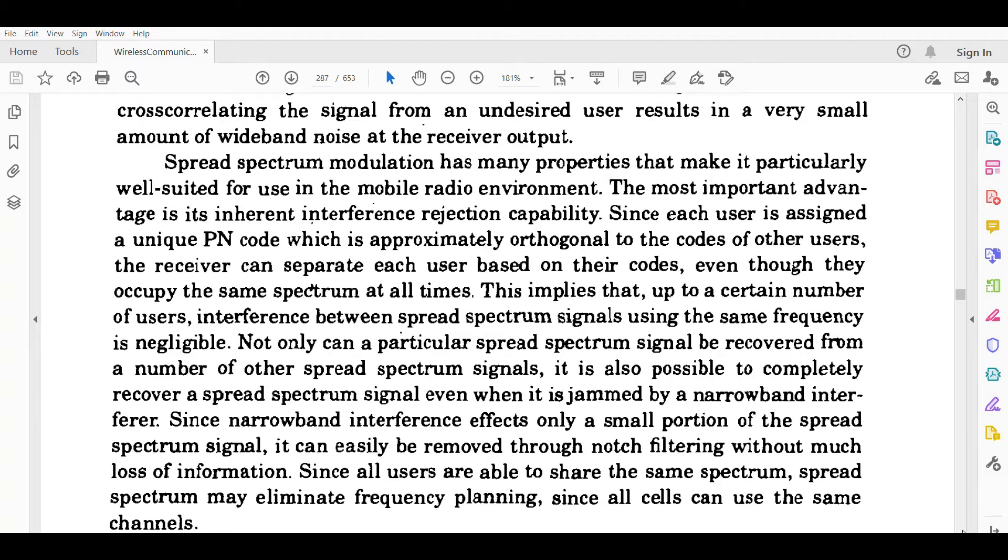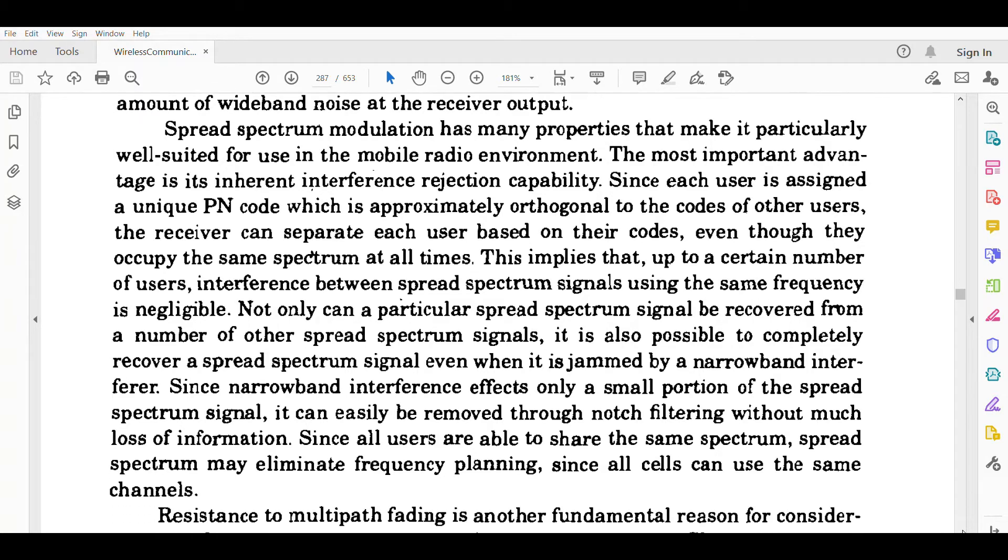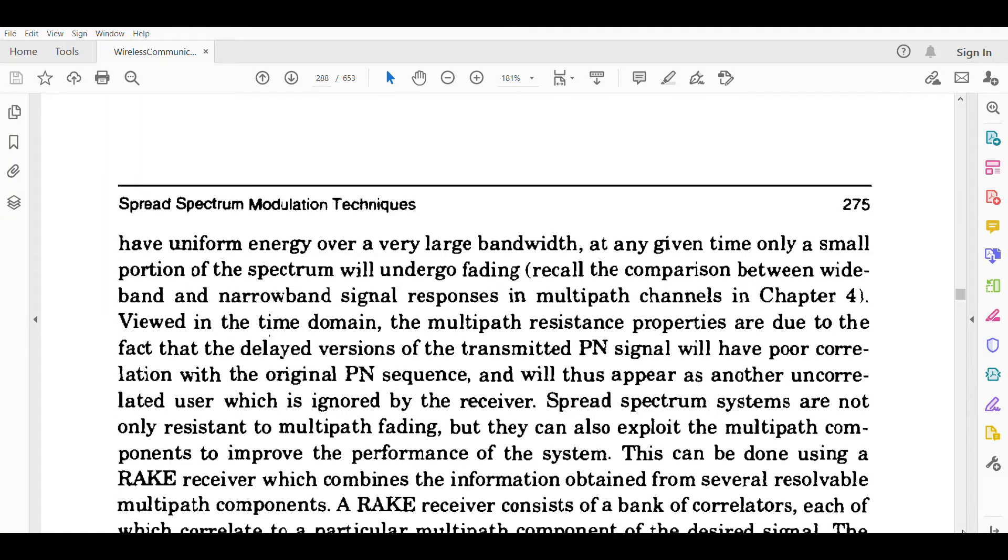Since narrowband interference affects only a small portion of the spread spectrum signal, it can easily be removed through notch filtering. Notch filter means to remove the noise. Since all users are able to share the same spectrum, spread spectrum may eliminate frequency planning since all cells can use the same channels.